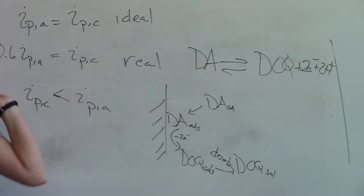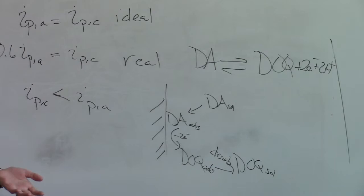So dopamine likes to stick to the electrode. When it becomes dopamine orthoquinone, it doesn't like to stick to the electrode. It falls off. And so we only see a fraction of what we should see for reduction.